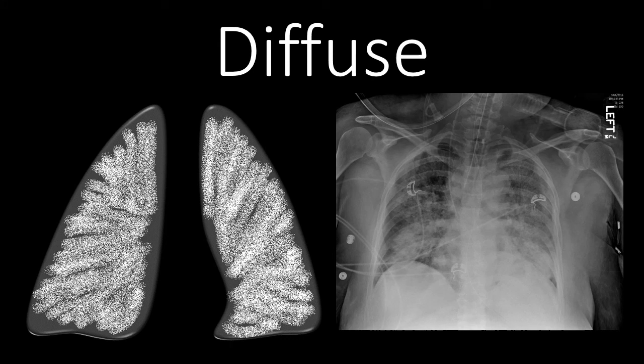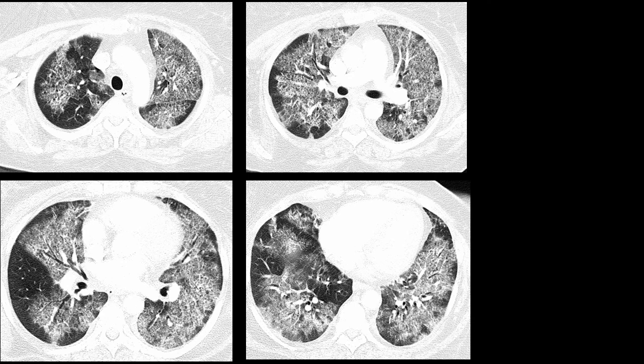I've provided a graphical representation of what I think of as a diffuse disease process, and an example of a person with a diffuse disease process on chest radiograph. You can see in the graphical representation and in the radiograph that the upper and lower lungs are involved, and it's relatively uniform in terms of that involvement. On the chest CT in this same patient, the pathology in the upper lobes is pretty similar to that in the lower lobes, with no upper or lower lobe predominance.